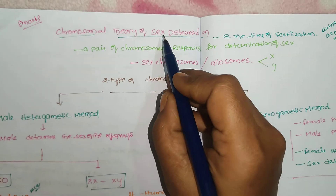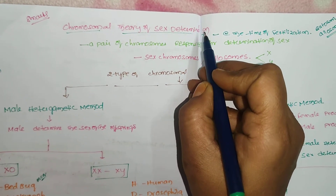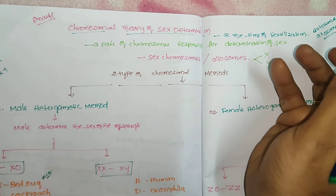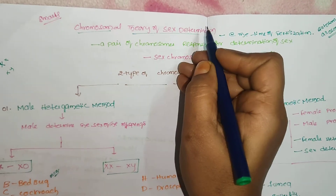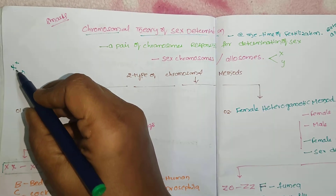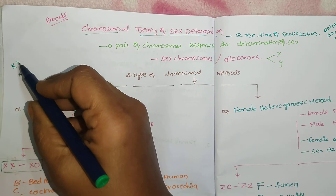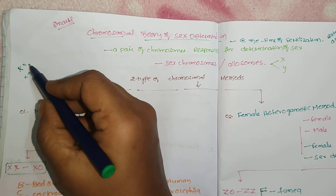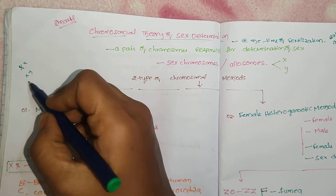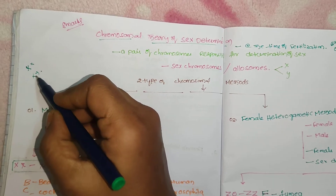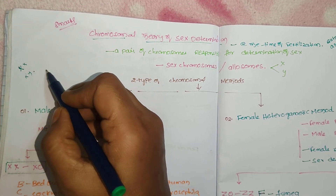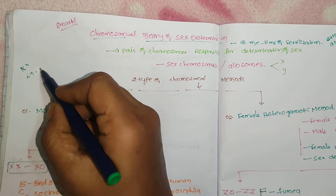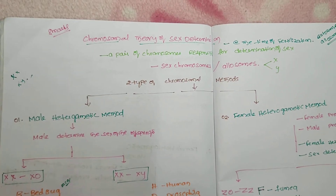Generally, sex determination is by the heterogametic sexes. Hetero means two different. For example, XX — these are two similar chromosomes. XY — dissimilar. So homo means similar, hetero means different. XY is different. The heterogametic condition will decide the sex of the offspring. That is the core concept.